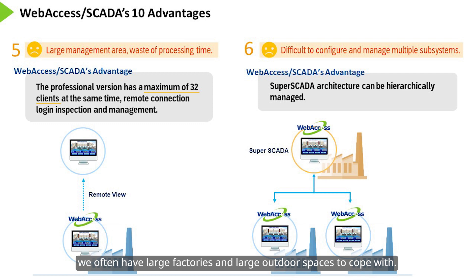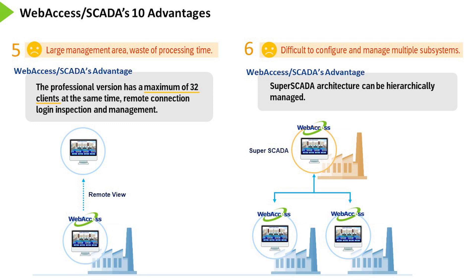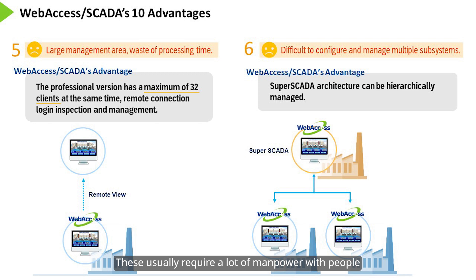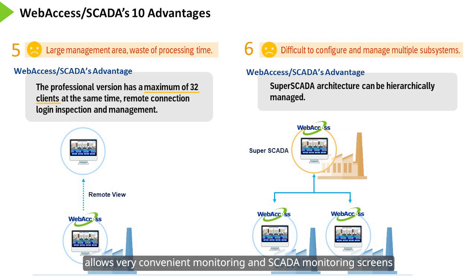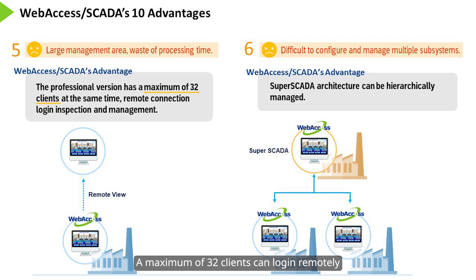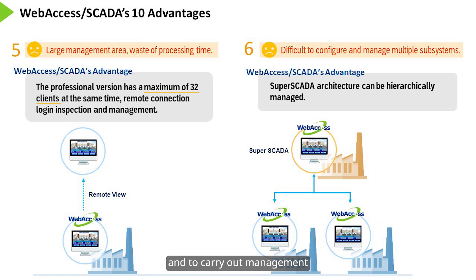Next, we often have large factories and large outdoor spaces to cope with. This usually requires a lot of manpower with people going back and forth to handle problems in the field. The remote connection function of Web Access SCADA allows very convenient monitoring, and a SCADA monitoring screen can be accessed without the need to go on-site. A maximum of 32 clients can log in remotely through browsers at the same time to view status and carry out management.